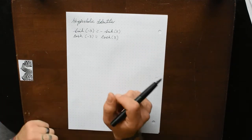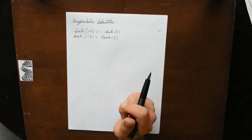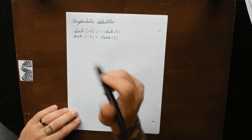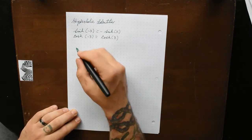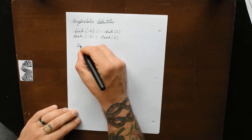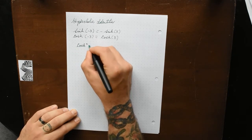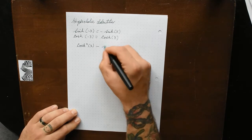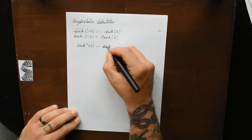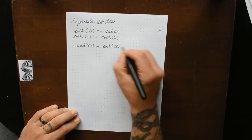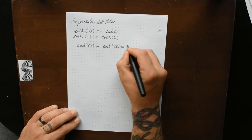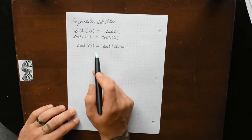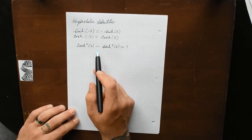Now this is where it's going to deviate a little bit from the normal trigonometric functions. For the hyperbolic functions, we have cosh²(x) minus sinh²(x) is equal to 1. This is where we start to deviate from our trigonometric functions.